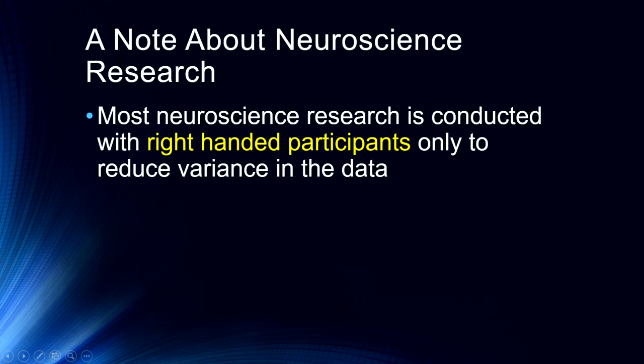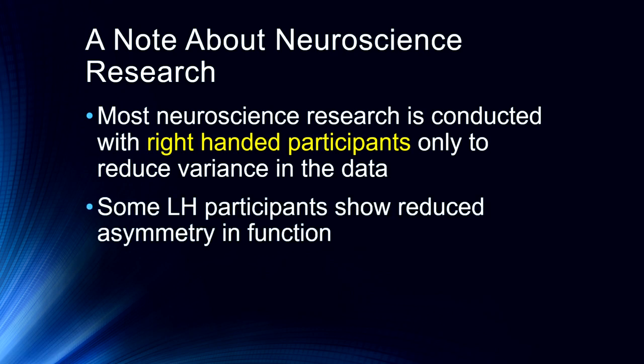One quick note we didn't cover when discussing neuroscience methods: be cautious when interpreting neuroscience research because it's almost entirely conducted with right-handed participants. In fact, a great deal of neuroscience research uses left-handedness as an exclusionary criterion. That's done to reduce variance in the data — it makes for cleaner, neater data — but it also makes for inaccurate data, as far as I'm concerned. So I think it's an important limitation.